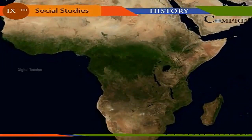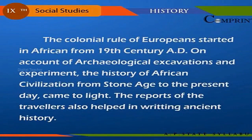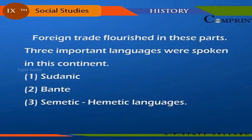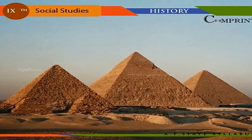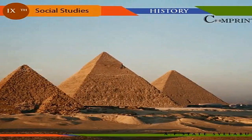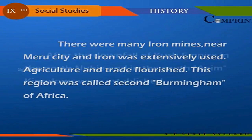Early African Civilization: For a long time the continent of Africa was not known to the outside world, and so it was called the dark continent. Colonial rule by Europeans started in Africa from the 19th century AD. Through archaeological excavations, the history of African civilization from the Stone Age to the present day came to light. Three important languages were spoken in this continent: Sudanic, Bantu, and Semitic-Hamitic languages. Egypt was an important country here, and around 10,000 years ago flourished the Kush Empire with the city of Meroe as its capital. There were many iron mines near Meroe, and iron was extensively used; agriculture and trade flourished, making this region the second Birmingham of Africa.